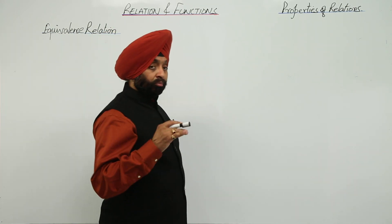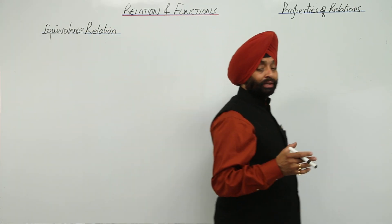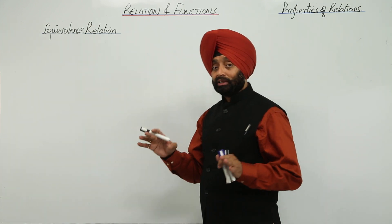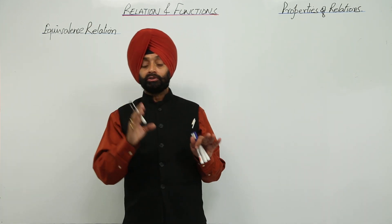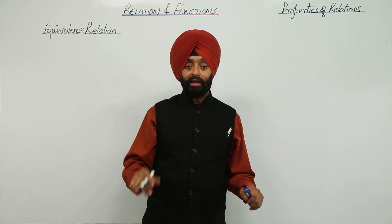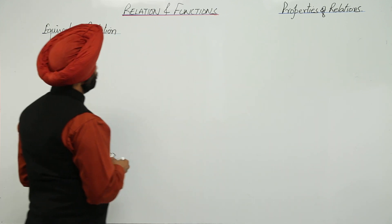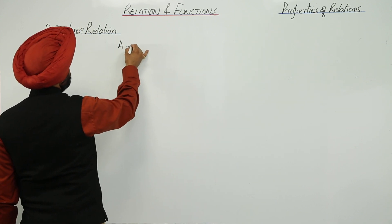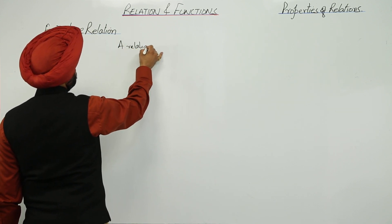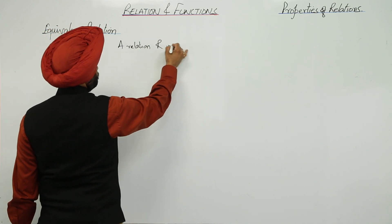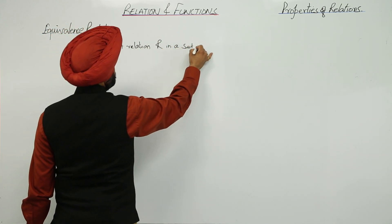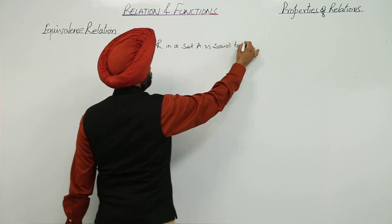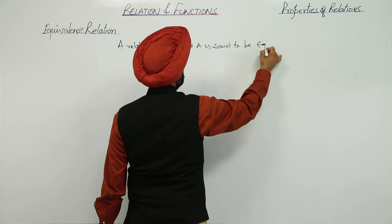Now, equivalence relation. Basically, what is the equivalence relation? If a relation has the properties for all 3 — reflexive, symmetric, and transitive — then it is an equivalence relation. Very simple. A relation R in a set A is said to be an equivalence relation.